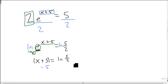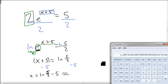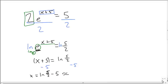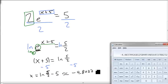To finish solving, I need to subtract 5 from both sides, so I get as an exact answer: x equals natural log of 5/2 minus 5. For my approximation, I go to my calculator and do the 5/2 first, then hit the natural log button, and then subtract 5 to get minus 4.8037.